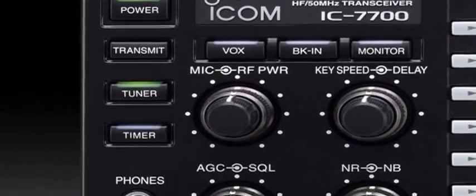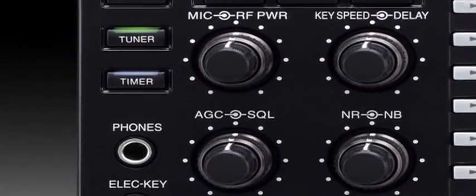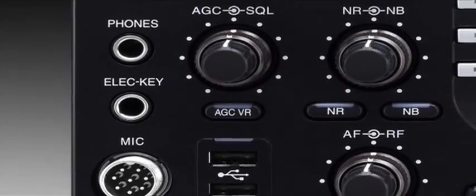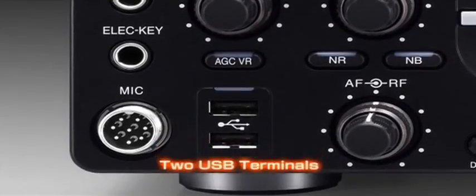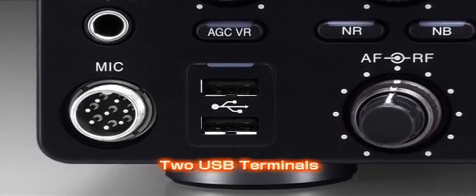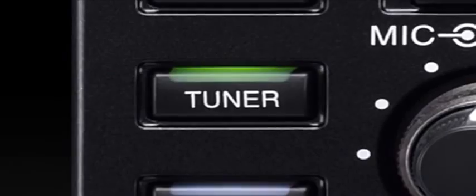In addition, the IC7700 has these industry-leading features as well. Two USB ports on the front panel allowing you to easily connect a USB type keyboard or USB memory stick to save transceiver settings, update firmware or transfer settings to other IC7700s.